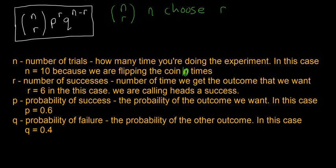r is the number of successes, the number of times we get the outcome that we want. We call this either a success or a failure, where p is a success and q is a failure. Sometimes it's not so easy to tell what's a success and a failure. You have to choose one of them to be called a success and one of them to be called a failure. So r is equal to six in this case. We're calling heads a success and we want six heads, so that means we want six successes.